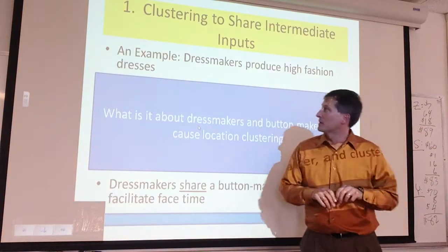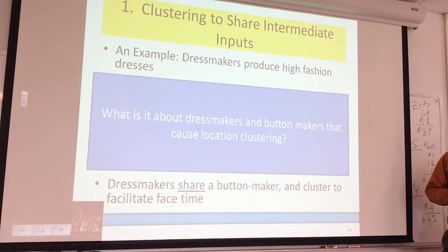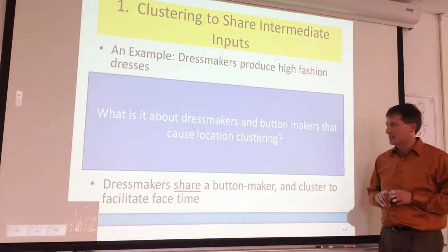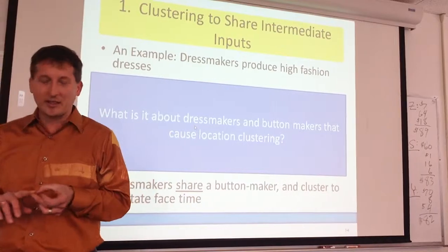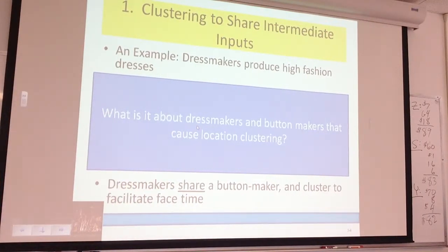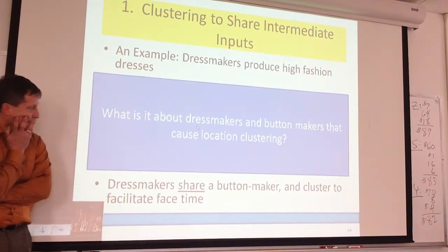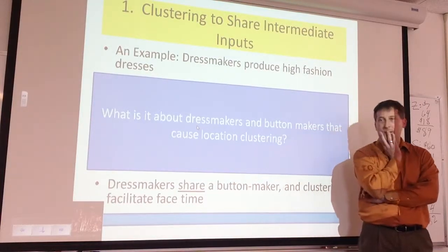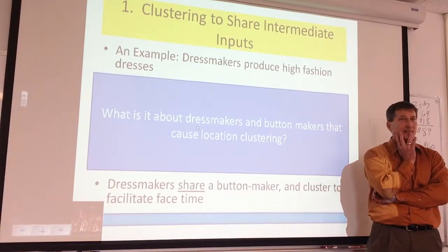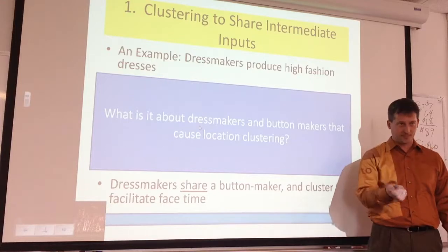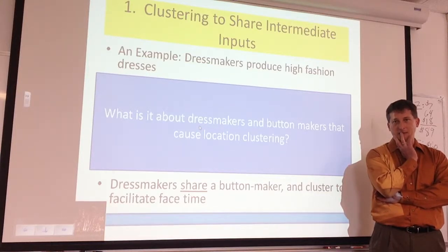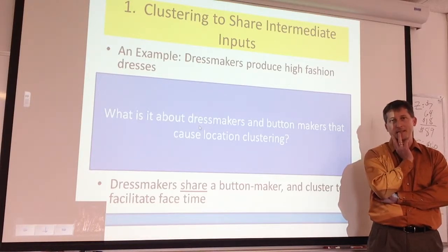Item number one: sharing intermediate inputs. Let's think about dressmaking. There's a cluster around buttons — what is it about dressmakers and button makers that causes location clustering? You can use buttons for a big thing in dressmaking. Are they a big thing? If you think about a garment, they're a necessary thing, but is it something you're necessarily brand loyal to? Or can you use each button for 500 different styles of dresses? Could it be that buttons attract other clothing companies and materials used for dresses? Yes — they're attracting the dressmakers.